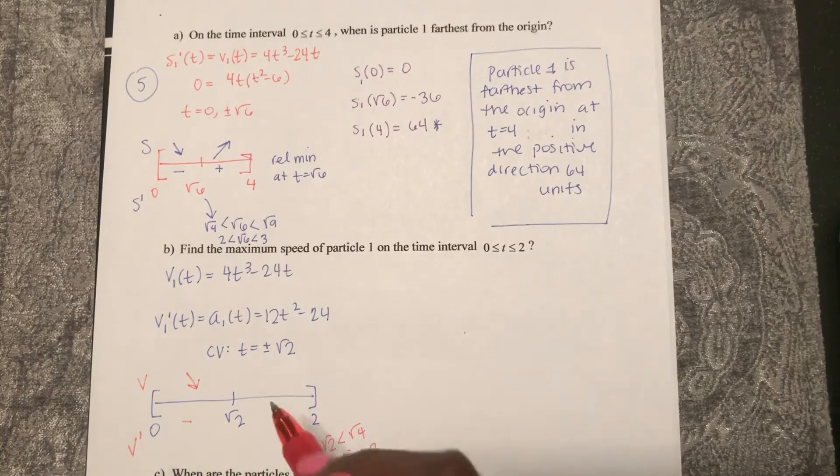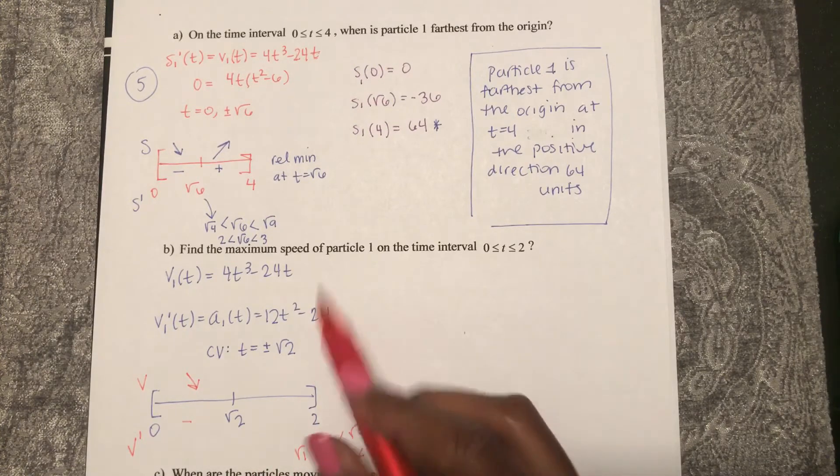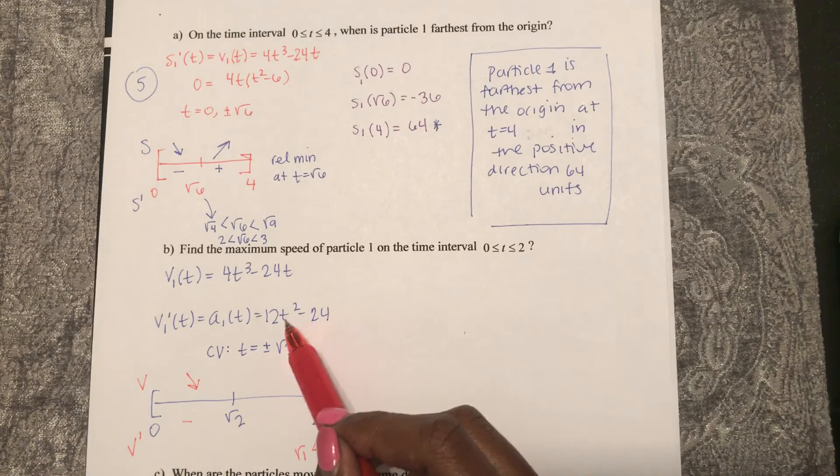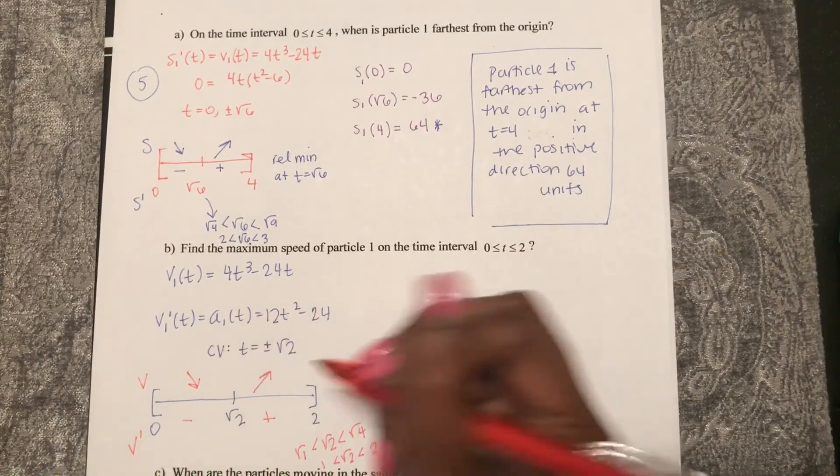If I plug in a number greater than square root of two, maybe square root of three, square root of three squared is three, 12 times three minus 24 is positive, increasing.